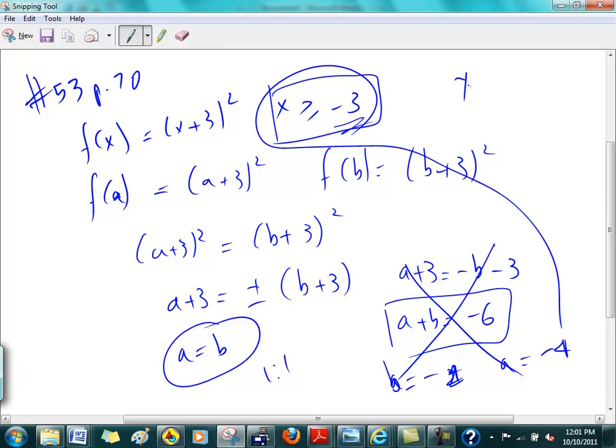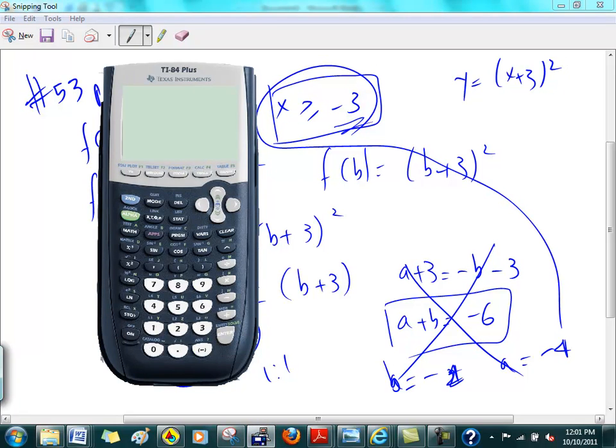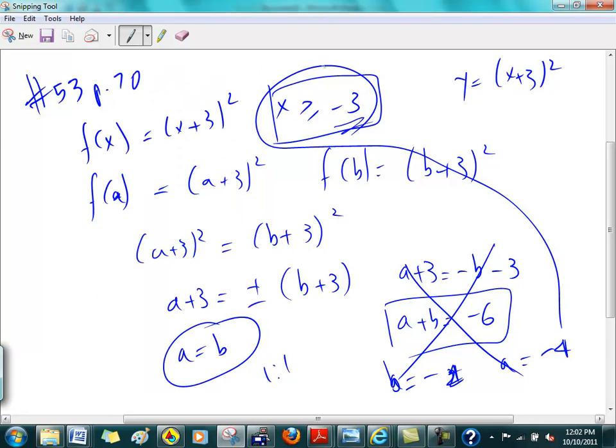You've got y is equal to x plus 3 squared. Right? So, you're going to graph that. I need to change my window again. I'm going to make it standard first. Okay? And then I'll work with it. Okay? There it is. Except we need to fix this guy. It tells you that x is greater than negative 3. X is greater than or equal to negative 3.